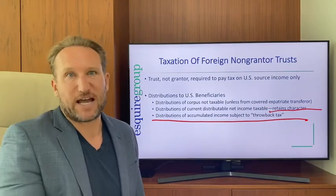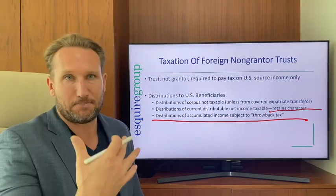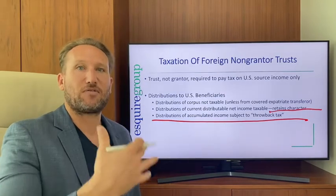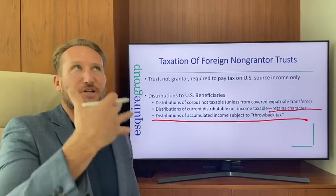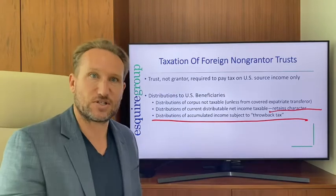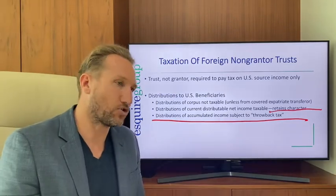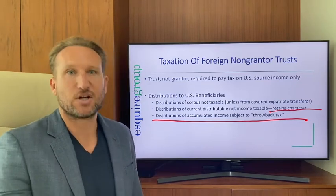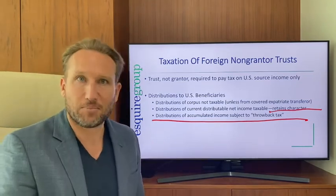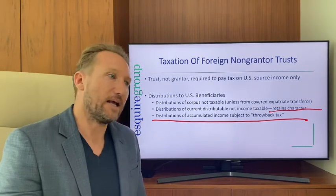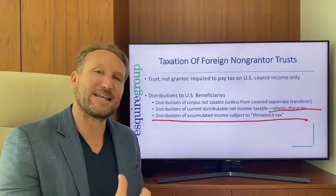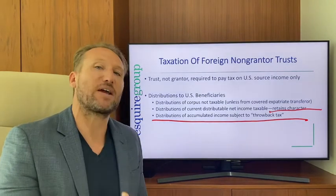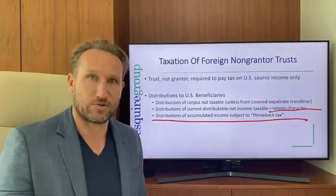This is a punitive tax, essentially to punish the beneficiary for deferring the tax by keeping income in the foreign trust. When it's distributed, they're subject to this extra throwback tax, which is extremely complicated to calculate. A lot of times that tax is so significant it wipes out almost the entire distribution.